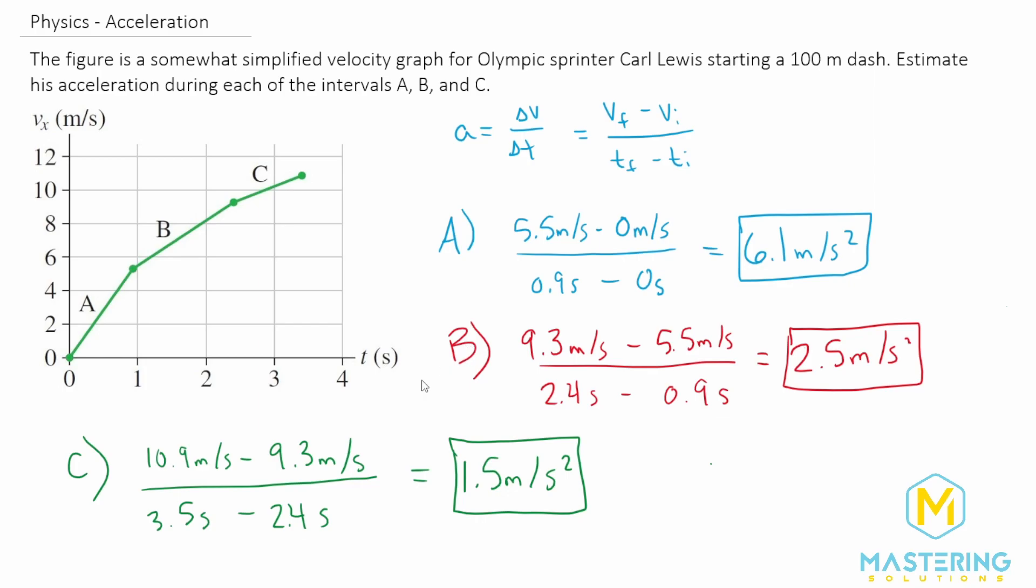Okay, so here are your answers for section A, B, and C for the acceleration for each of those sections by the Olympic sprinter, Carl Lewis.